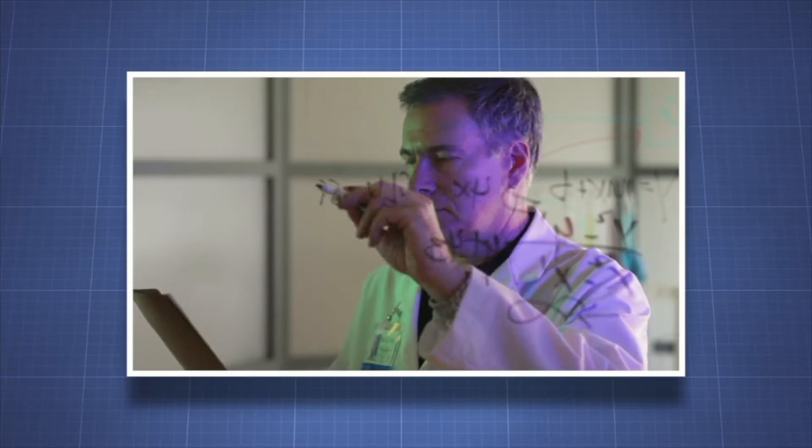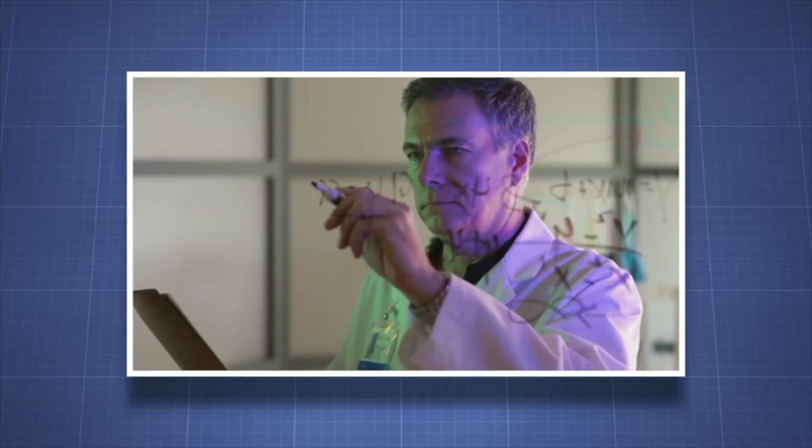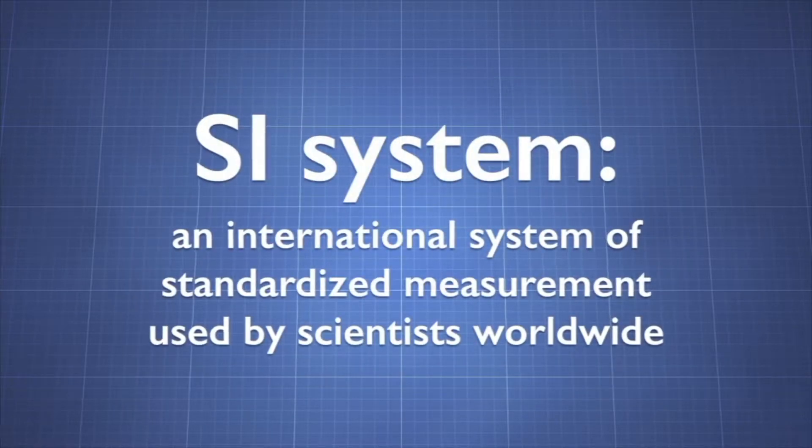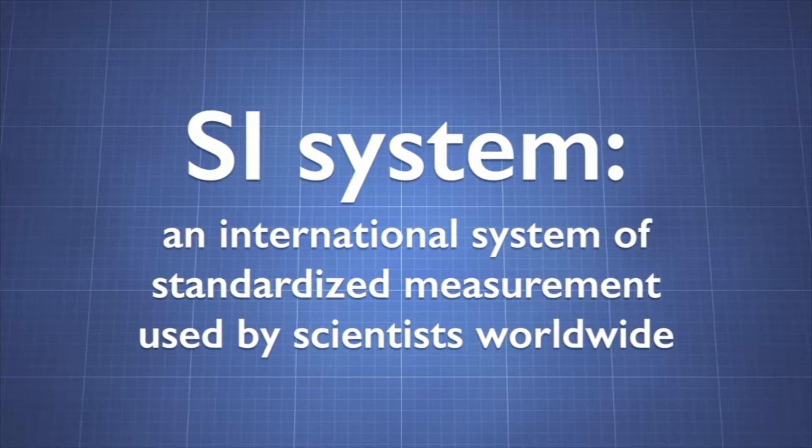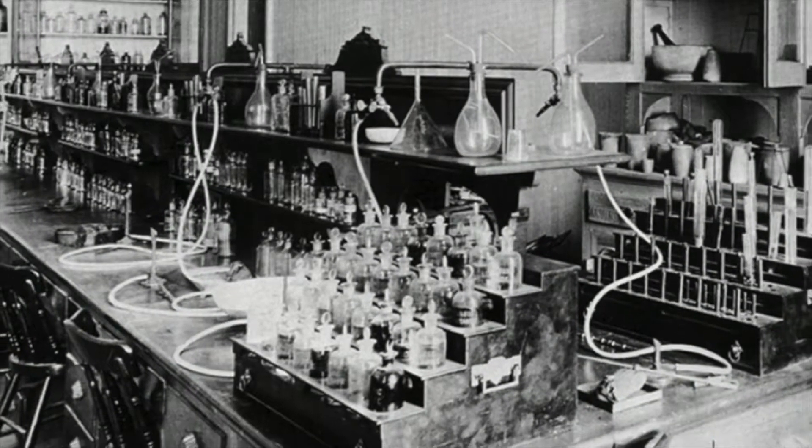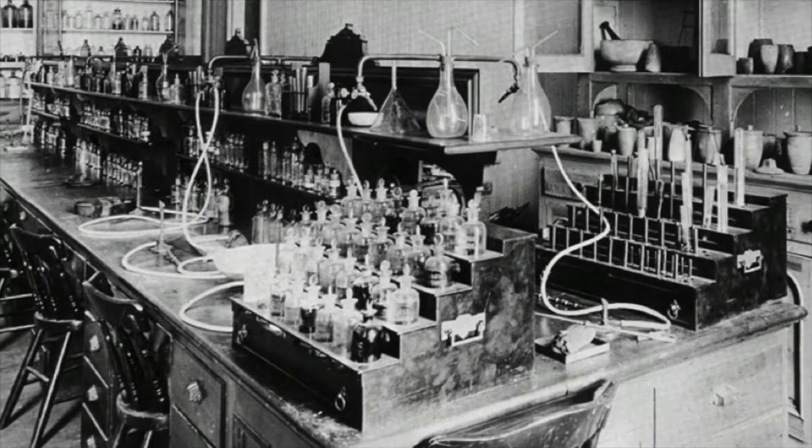What is the International System of Units? It is also called the SI, from the French Système International. The SI is an international system of standardized measurement used by scientists worldwide. The system dates back to 1875 and was based on the metric system.